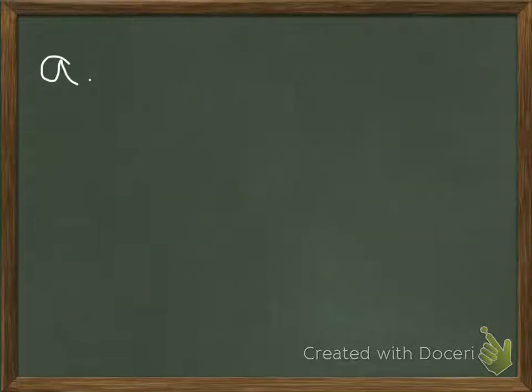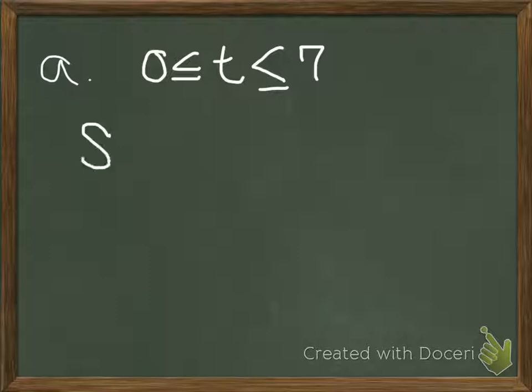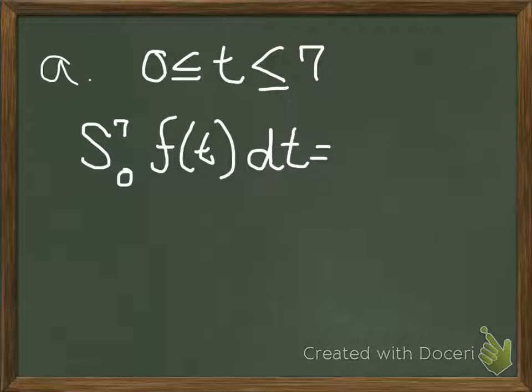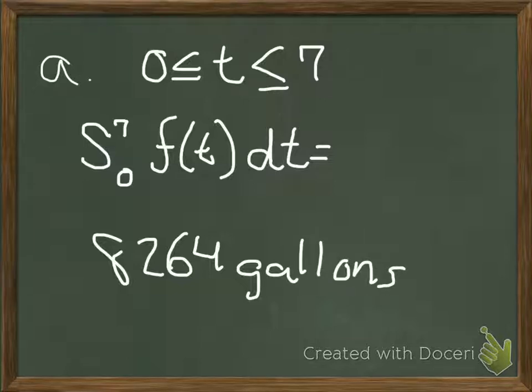The first question is, how many gallons enter the tank in the time interval from 0 to 7? For this problem, you need to do an integral from 0 to 7 of F(t) dt, and you put that in your calculator and you get 8,264 gallons of water total which enters the tank.